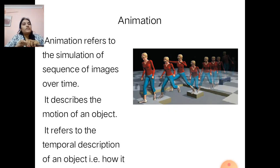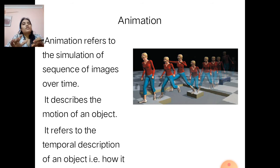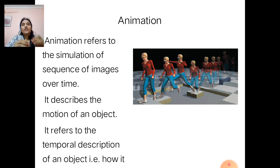Animation refers to the simulation of a sequence of images over time. It also describes the motion of an object — the temporal description of how it moves over time or how its different effects change. Animation also has different types such as keyframe animation and motion viewing animation, which we will cover in the practical classes.